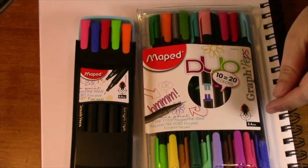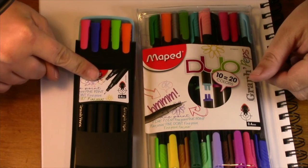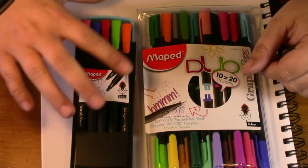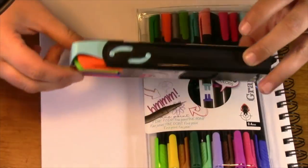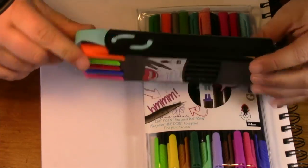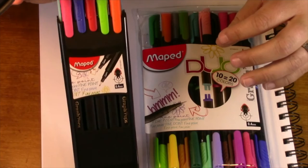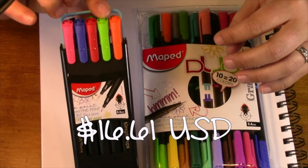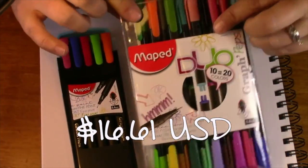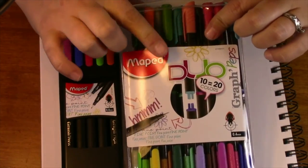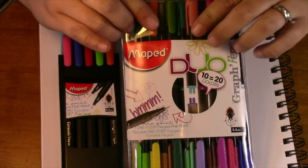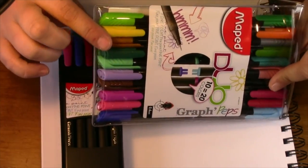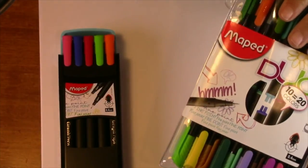Right here we have the Maped Graph Peps. This is a 10-pack with five colors on this side and five colors on this side. This retails for $16.61 on Amazon. And here we have the Maped Duo Graph Peps, and this is 10 pens that have 20 colors total. There's one on each side.